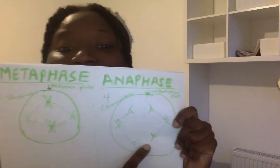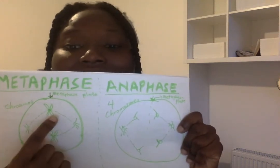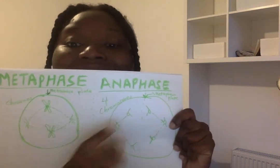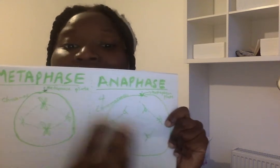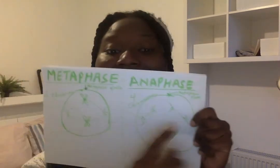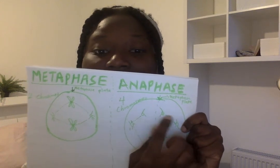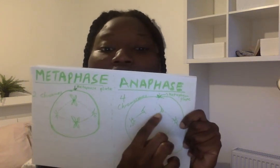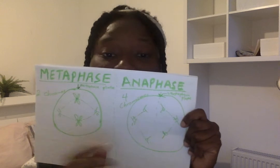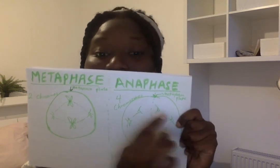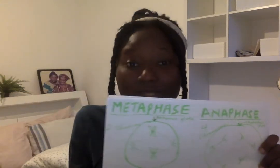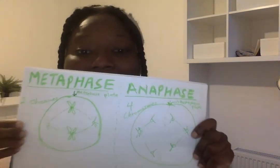Then the next thing that will happen in anaphase is that the sister chromatids separate and they move to opposite poles. They maintain their centromere - this round thing is the centromere - so you see sister chromatids separate, and despite separating they both maintain their centromere. So in anaphase you have separation of sister chromatids, both maintaining their centromere, and they move to opposite poles of the cell.